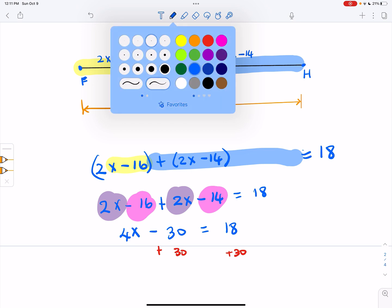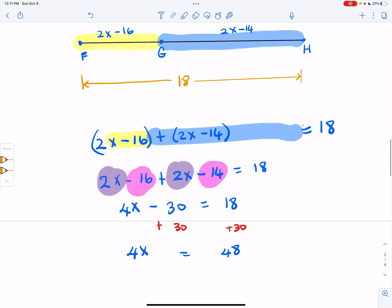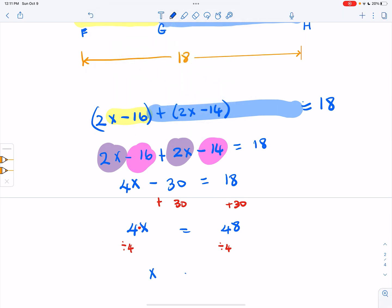And we get that 4x is equal to 48. And now, as you may know from algebra 1, the operation between here is multiplication. So in order to get the x alone, we have to divide by 4. We have to divide both sides by 4. And so we end up getting that x is equal to 12.